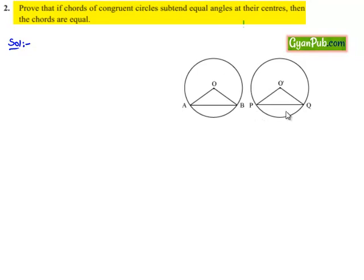Let AB and PQ be the chords in the two congruent circles which subtend equal angles at the center, that is, angle AOB is equal to angle PO'Q.